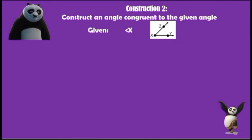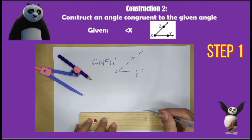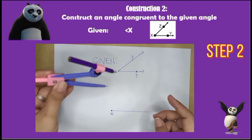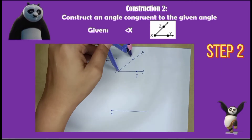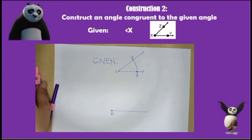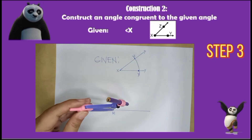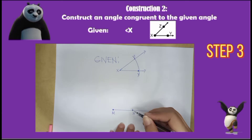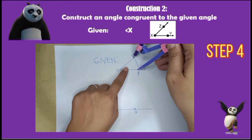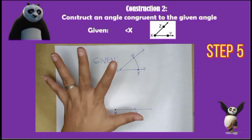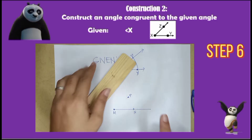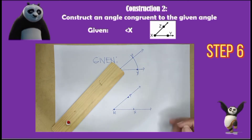Now I will show you the actual construction. Step 1: Draw a ray and name the endpoint as point M. Step 2: Measure line segment XZ and line segment XY, then draw an arc. Step 3: Draw a similar arc using center M with length similar to line segment XY, then name it point N. Step 4: Go back to the given and set the compass opening to the length of YZ. Step 5: Using N as center and YZ as radius, assign the point where the pencil lands. Step 6: Draw a ray MP to complete angle M congruent to angle X.